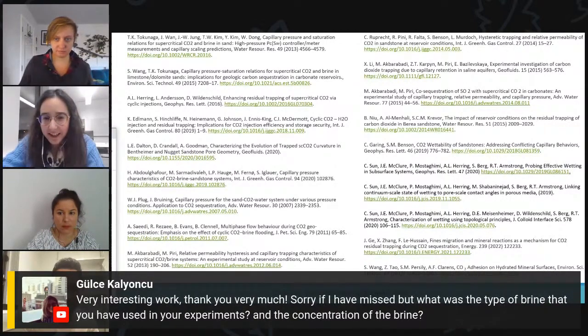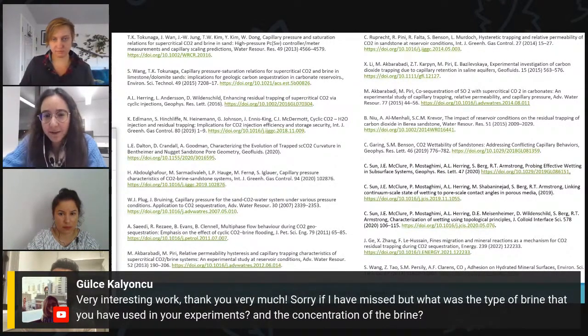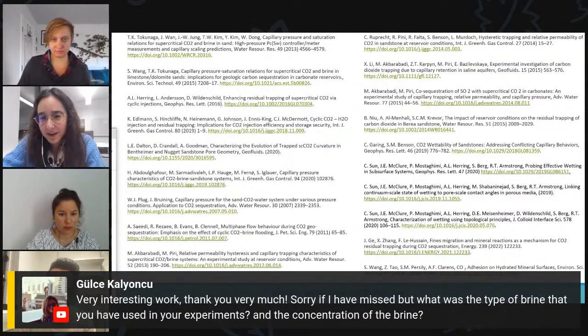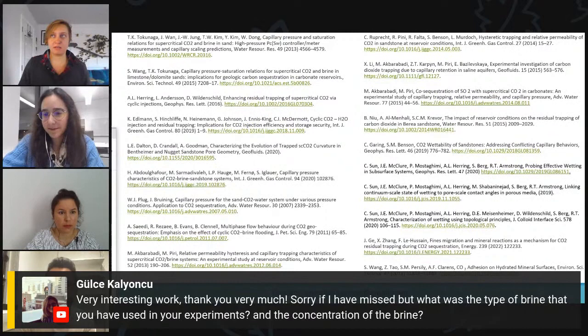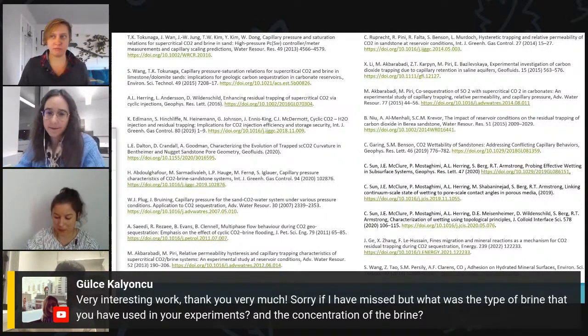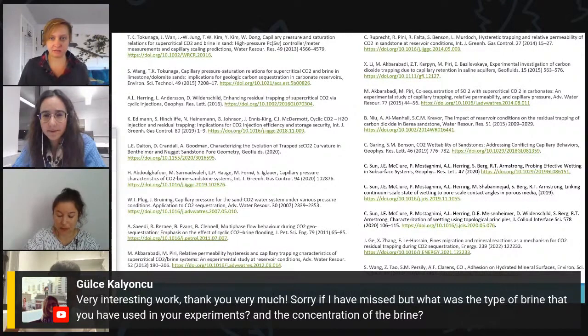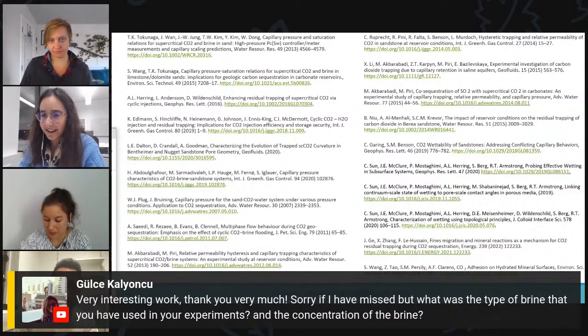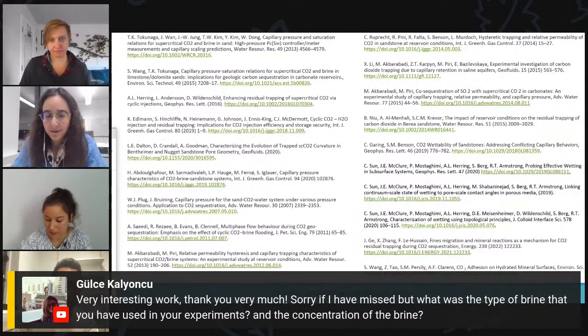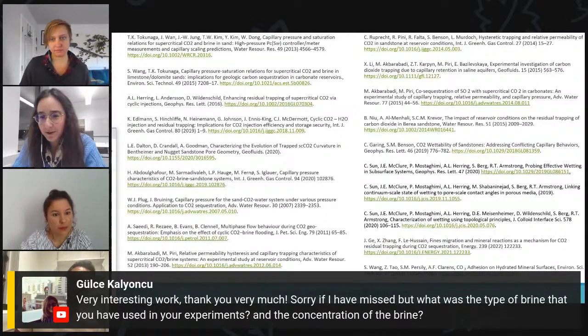And the last one. From Gursker Yonkou. Very interesting work. Thank you very much. Sorry if I missed, but what was the type of brine that you have used in your experiments and the concentration of the brine? It was potassium iodide brine, and it was the concentration of one molar. So, one mole of potassium iodide per liter. And that's mostly, we chose that mostly for x-ray CT attenuation purposes.